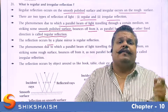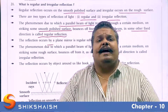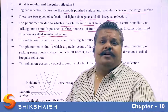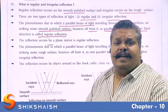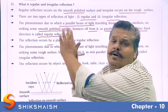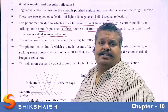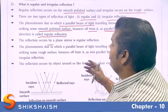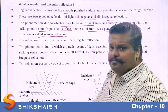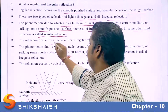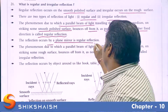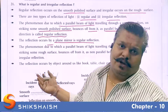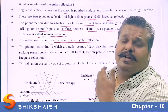When a parallel beam of light is incident on a smooth or highly polished surface, the reflected rays from the surface are also parallel to each other. This type of reflection is known as regular reflection. A reflection occurring by a plane mirror is an example of regular reflection.